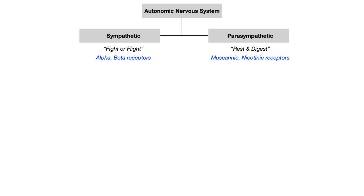In terms of receptors, the sympathetic nervous system works through alpha and beta receptors, whereas the parasympathetic nervous system works through muscarinic and nicotinic receptors. I'm taking some liberties simplifying these two nervous systems down to just two receptors each — this is not an all-inclusive list, but it helps you form a conceptualization.